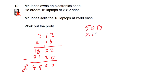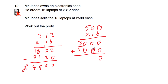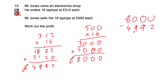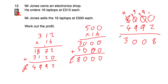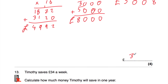Now let's see how much he sold them for: £500 each, 16 of them. 500 multiplied by 6: 6 times 0 is 0, 6 times 0 is 0, 6 times 5 is 30, giving 3,000. Then multiplied by 10 gives 5,000. Adding: 0 plus 0, 0 plus 0, 0 plus 0, 3 plus 5 is 8. He sells the laptops for £8,000. Subtracting: 8,000 minus 4,992. Borrowing through, 10 take away 2 is 8, 9 take away 9 is 0, 9 take away 9 is 0, 7 take away 4 is 3. Mr Jones made a profit of £3,008.